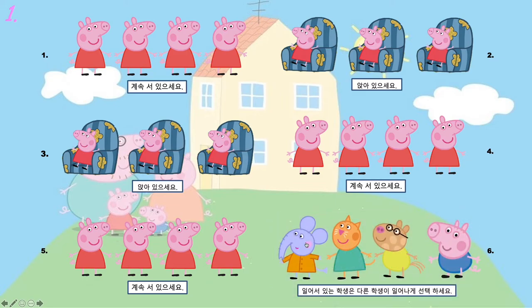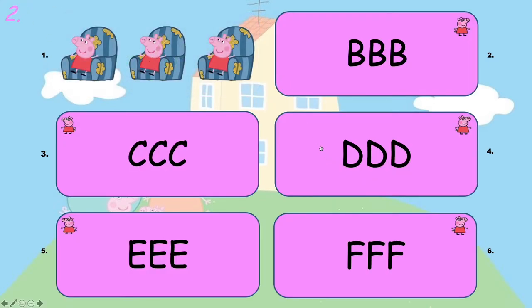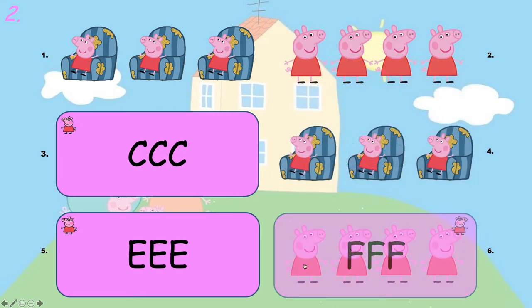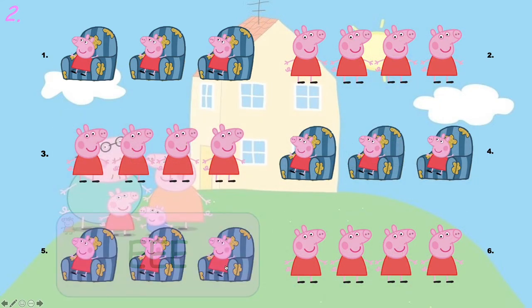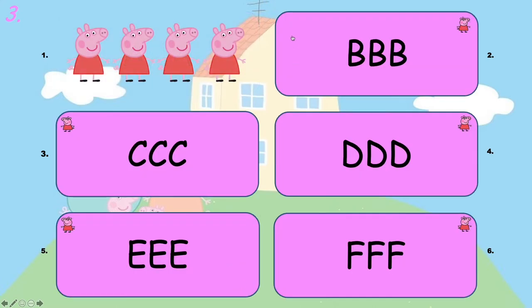On the first slide, Korean instructions are there to remind the kids how this game is played — whether they stand up or sit down. But when we go into the next slide, there's no Korean there. By that time the students should know what they've got to do; they usually remember very quickly.